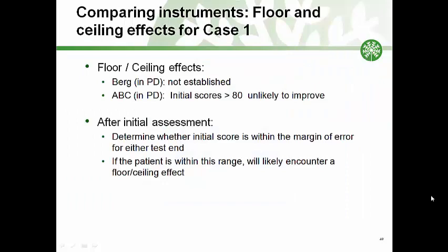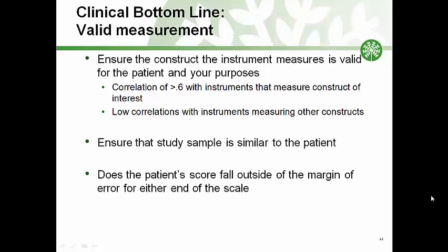The Dynamic Gait Index will be eliminated because it has not been tested in Parkinson's disease. The Timed Up and Go will be eliminated because it doesn't appear to correlate well with static or dynamic balance measures. The results of the validity comparison indicate that we should continue to assess only the Berg Balance Scale, since it assesses two areas of interest — static and dynamic balance — and the ABC may also be considered because it assesses a different but possibly important aspect of balance related to falls. There is limited data on floor and ceiling effects for both the Berg and ABC in Parkinson's disease; however, you can assess whether your patient is likely to encounter a floor or ceiling effect after the initial assessment by determining whether the initial score is within the margin of error for either test end.